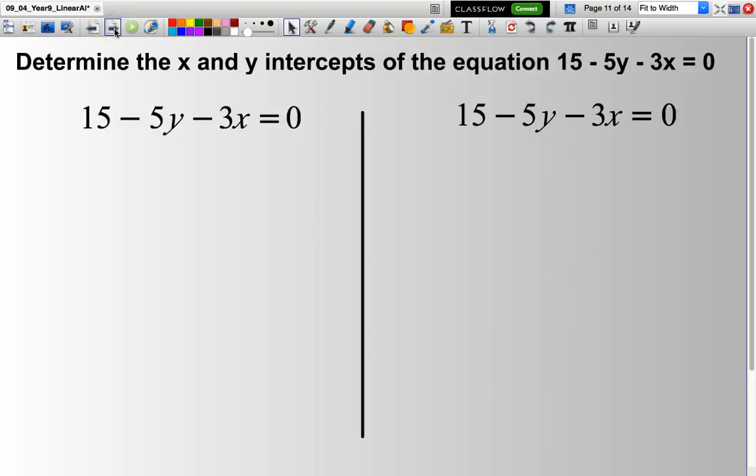Let's look at the next one. Slightly more complicated again. This time the equation of my line is 15 - 5y - 3x = 0.